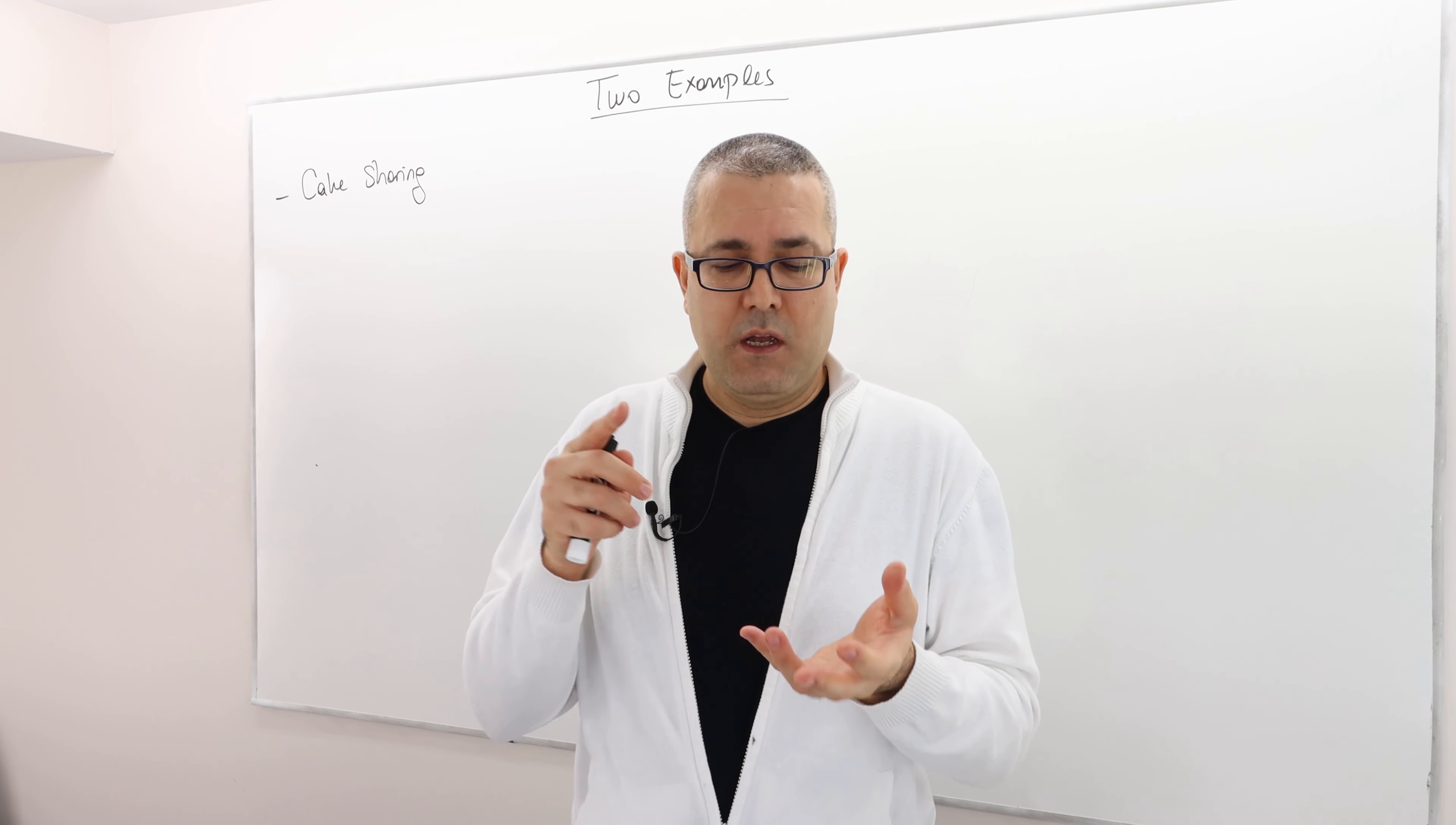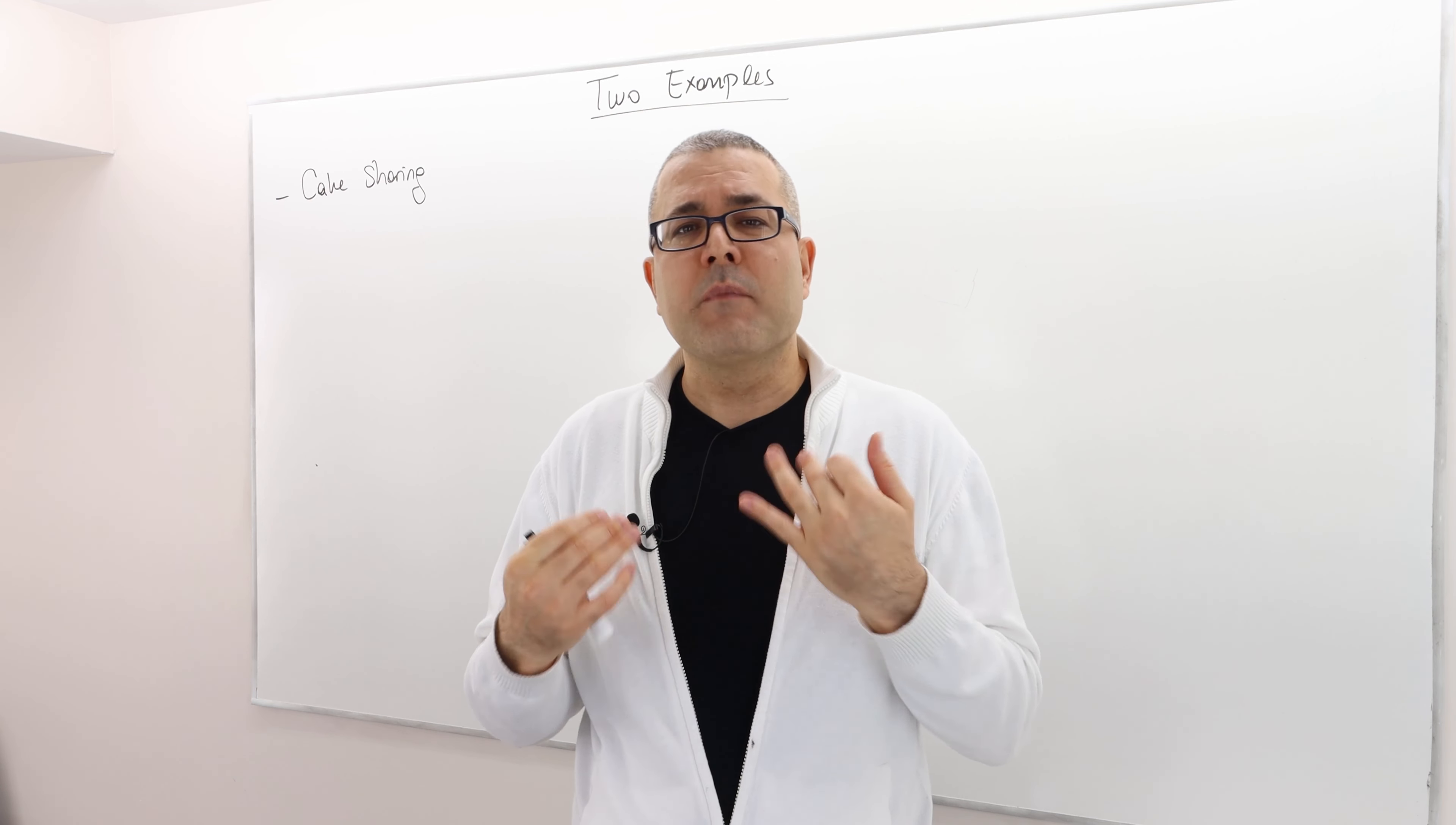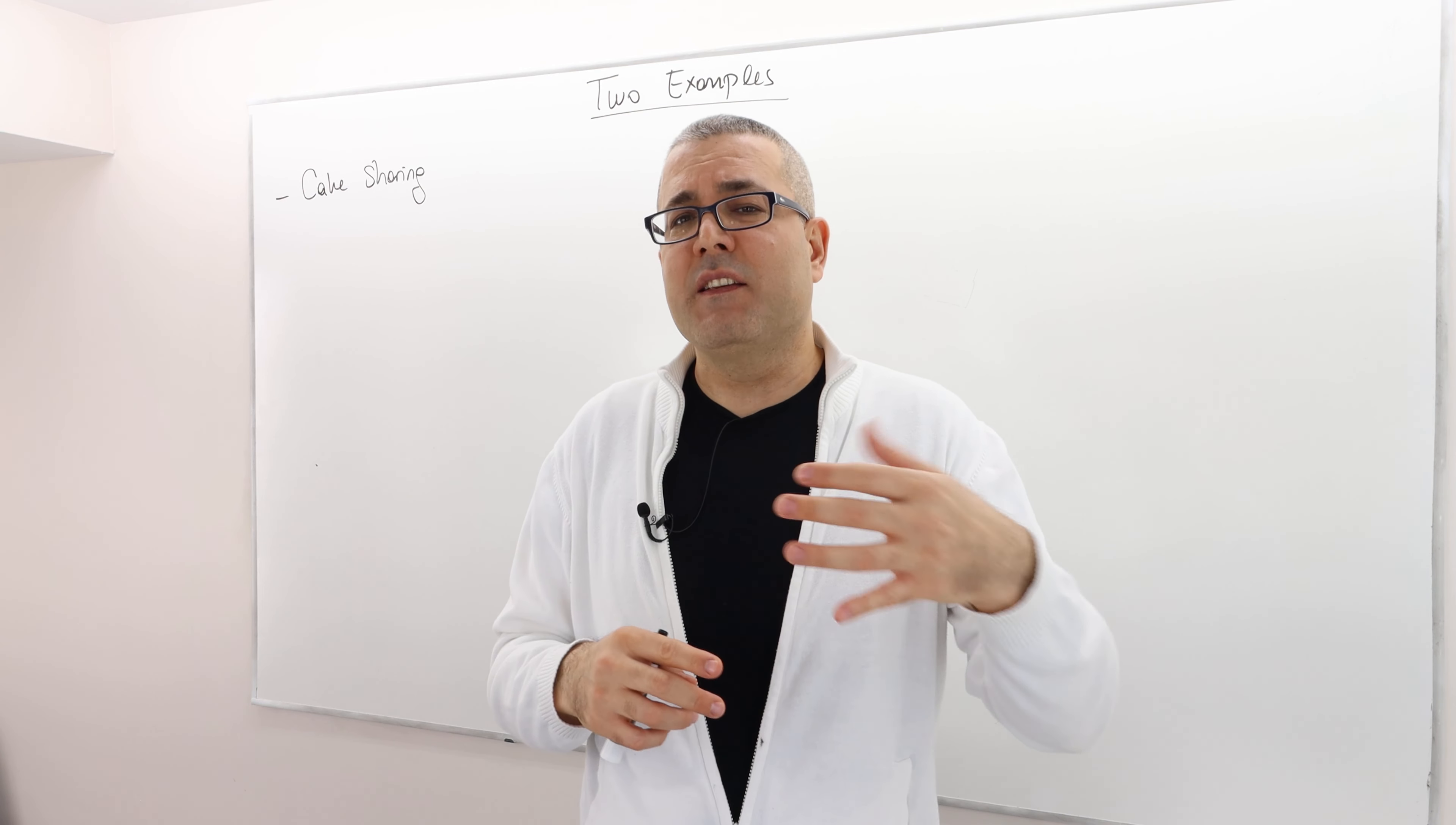So who are the participants? Two kids, Bob and Alice. These are the participants. What about the father? Is he a participant? Well, he doesn't want to eat the cake. So he doesn't really benefit out of the outcome. And so he is not really a participant.